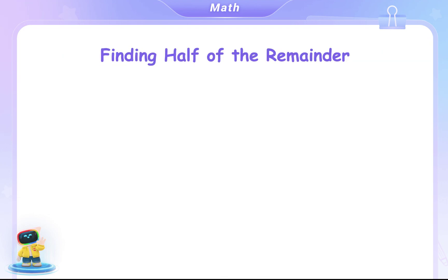To find half of 53 twentieths, we multiply by one half. This gives us 53 fortieths.